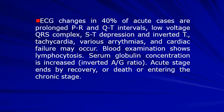ECG changes occur in 40% of acute cases: prolonged PR and QT intervals, low voltage QRS complex, ST depression, inverted T waves with tachycardia, various arrhythmias, and cardiac failure. Blood examination shows lymphocytosis. Serum globulin concentration is increased with an inverted albumin-to-globulin ratio. The acute stage can end by recovery, death, or by entering into the chronic stage.